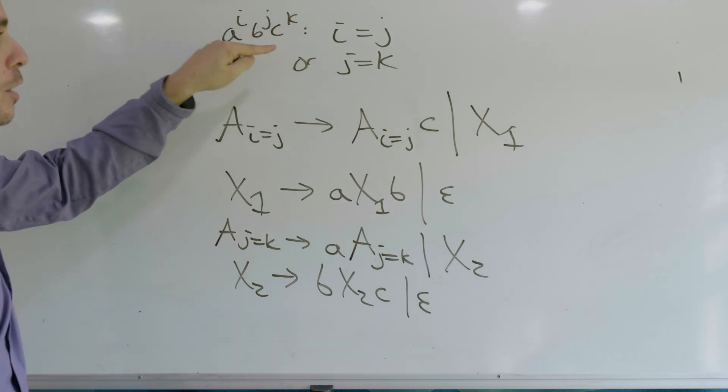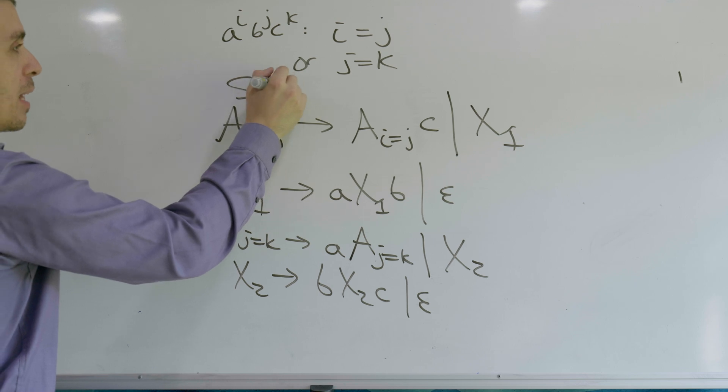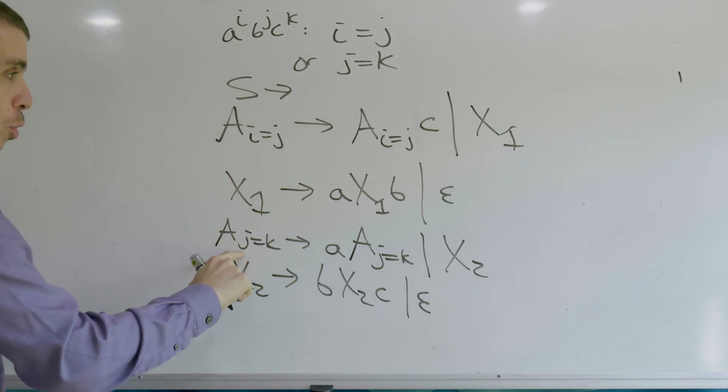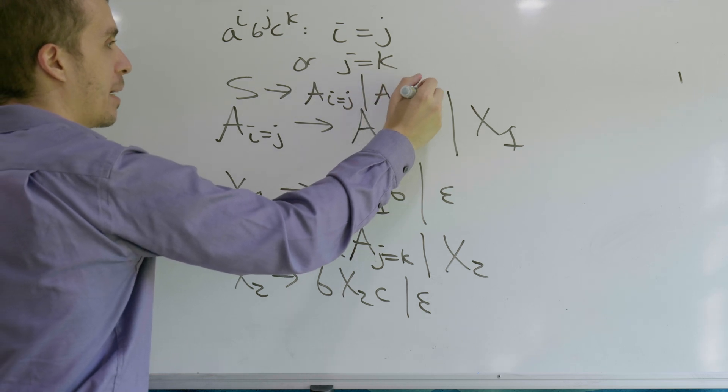How do we combine them? Using OR, because that's what the language asks for. So let's make a variable S, which does this one or this one. A_i=j or A_j=k.